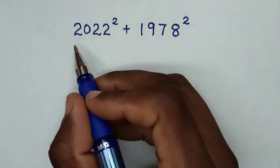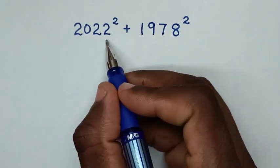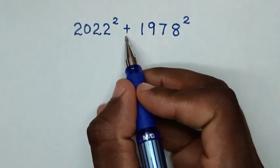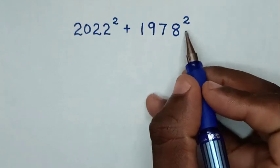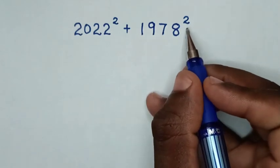Hello! We have 2022 squared plus 1978 squared.